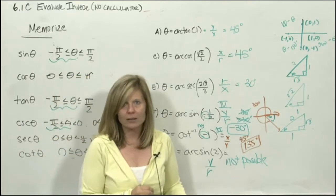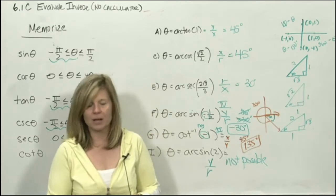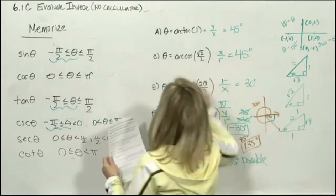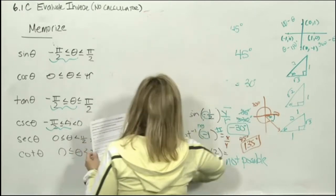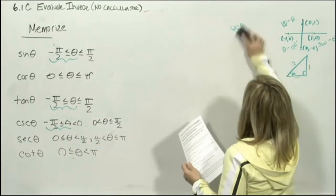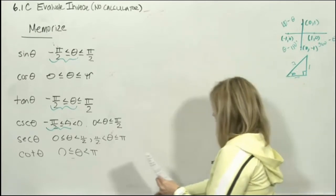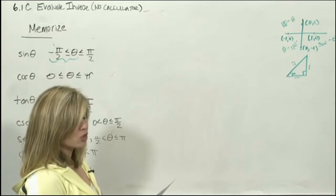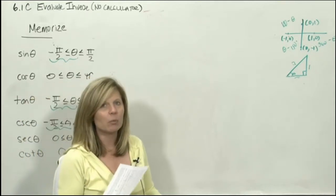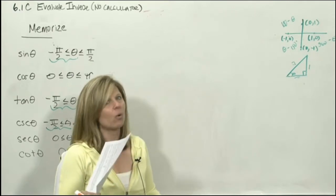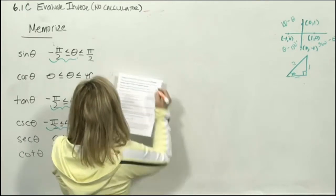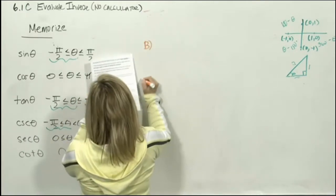Now let's step it up a notch. Who says the angle measurement always has to be given in degrees? Let's go to a couple more examples in your notes — set 4. When they say they want the angle as a real number, they don't want it in degrees, they want it in radians.